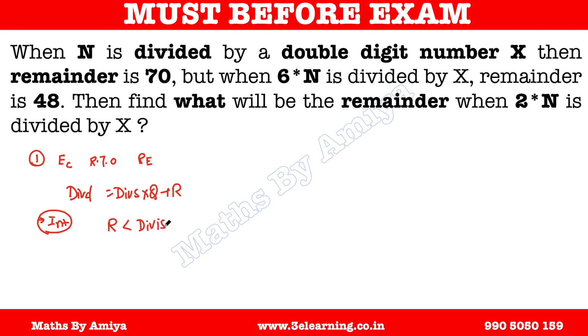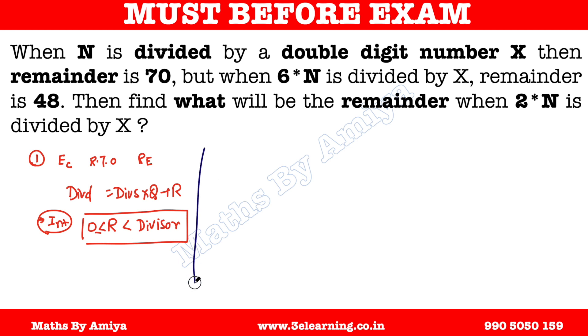The second condition is that the remainder should always be less than the divisor — remainder is smaller than divisor and greater than or equal to zero. We see the concept of negative remainders in theory, but practically it doesn't happen. So with this concept, we will solve the question and move on.